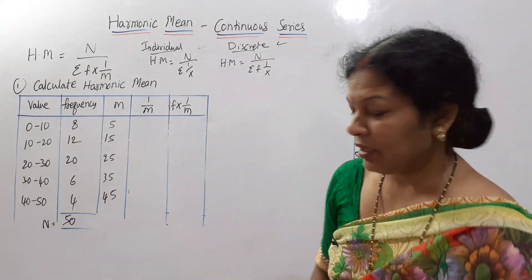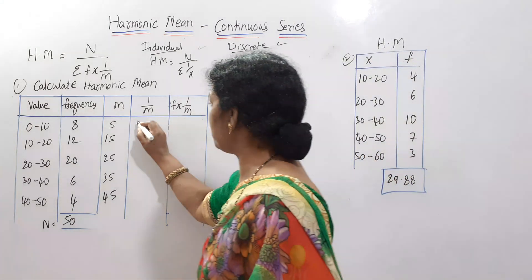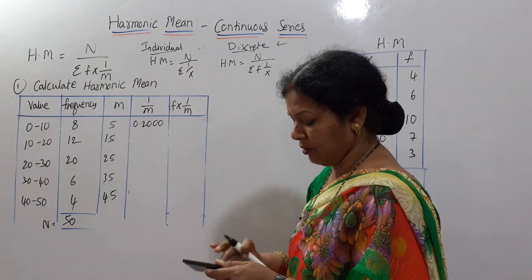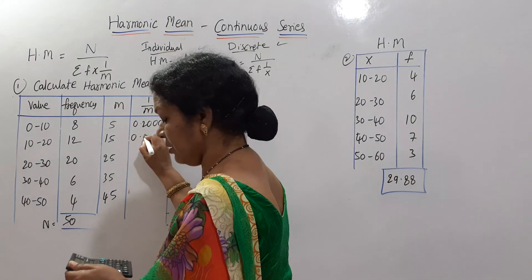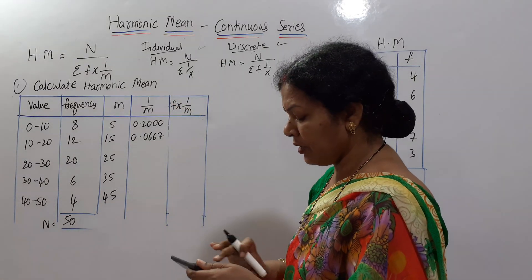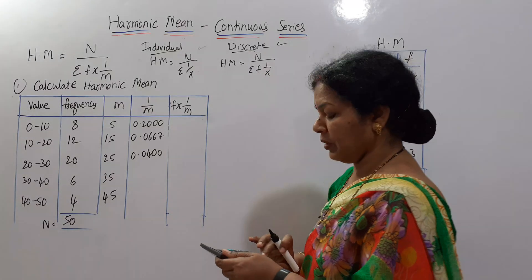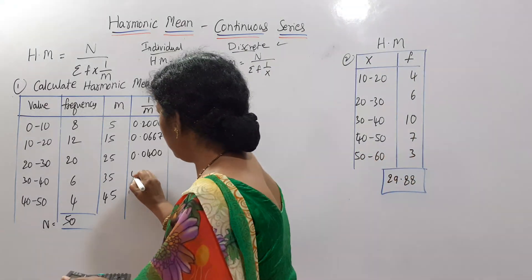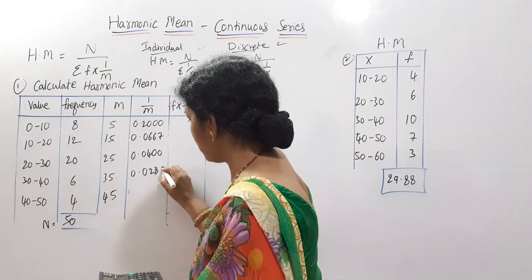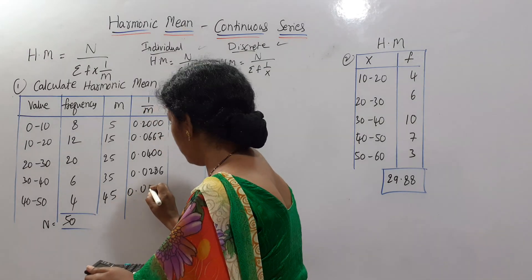Now for 1 divided by m: 1 divided by 5 equals 0.2; 1 divided by 15 equals 0.0667; 1 divided by 25 equals 0.04; 1 divided by 35 equals 0.02857; 1 divided by 45 equals 0.0222.